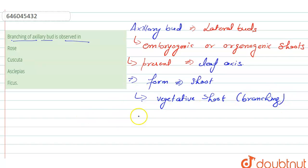This kind of branching in the axillary bud is found in the Cuscuta plant.